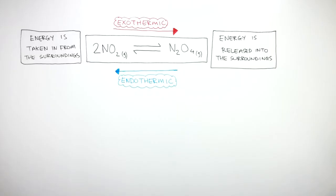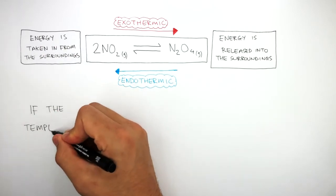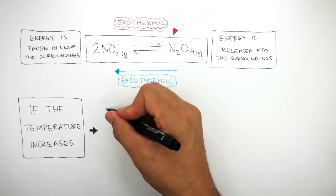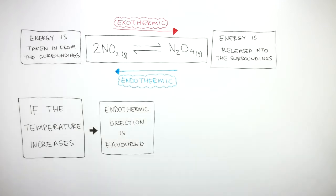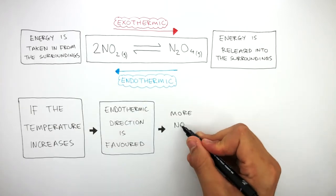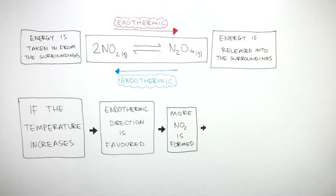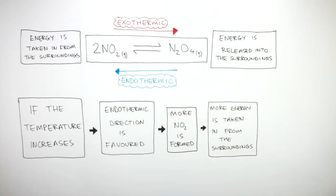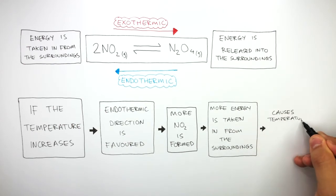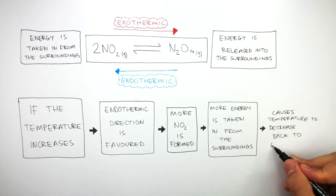So in this reversible reaction, if the temperature increases, the endothermic direction is favoured. So more NO2 is formed, and more energy is taken in from the surroundings as the endothermic direction is favoured. As the endothermic direction is favoured, this causes the temperature to decrease back to the equilibrium.